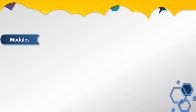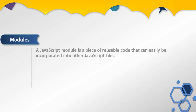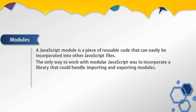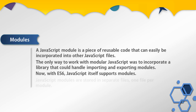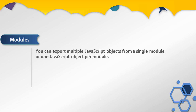The first question that comes to mind is: what is a module? A JavaScript module is a piece of reusable code that can easily be incorporated into other JavaScript files. Until recently, the only way to work with modular JavaScript was to use a library. Now with ES6, JavaScript itself supports modules. JavaScript modules are stored in separate files — one file per module. You can export multiple JavaScript objects from a single module, or one JavaScript object per module.